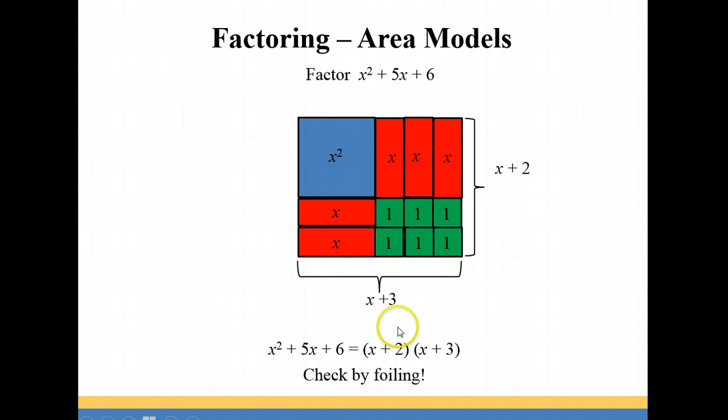So you have x times x is x squared. x times 3 and 2x gives us the 5x. And then 2 times 3 is 6. So you can see that it's working.